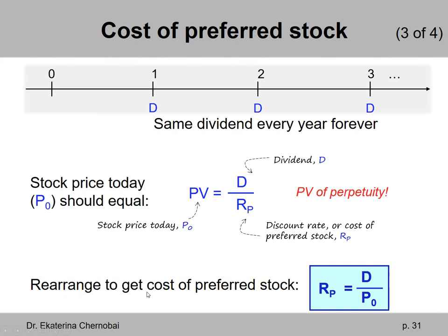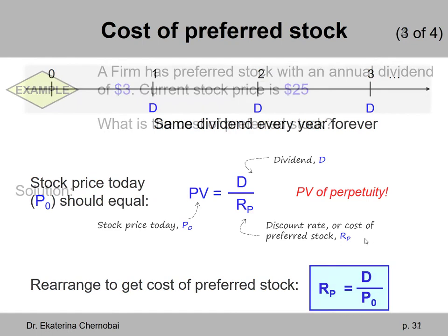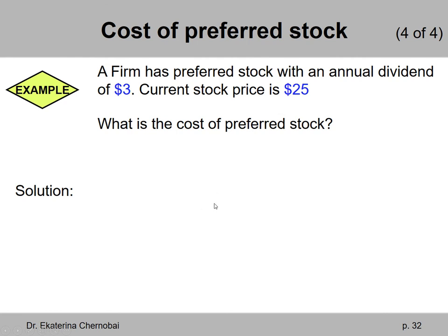Rearranging gives the cost of preferred stock formula: R_P, the cost of preferred stock, equals the dividend amount divided by the price per share today. Let's look at this example. A firm has preferred stock with an annual dividend of $3. The current stock price is $25. What is the cost of preferred stock?